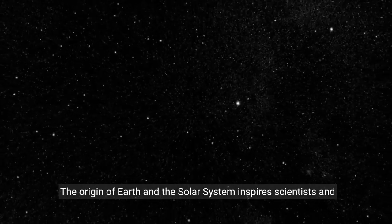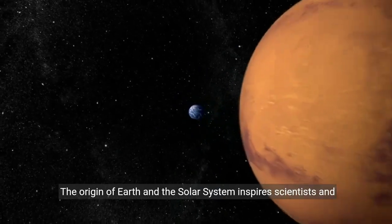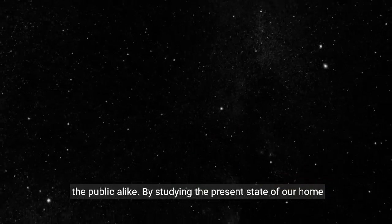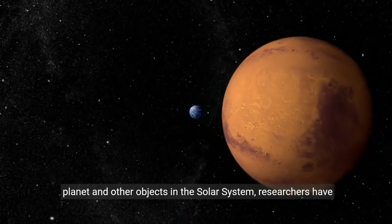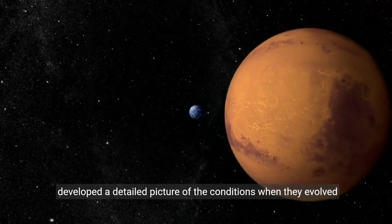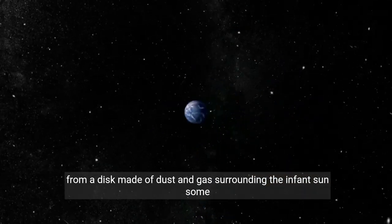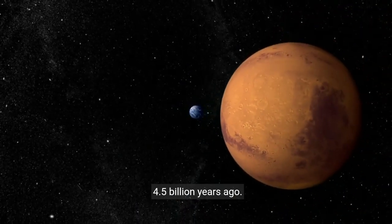The origin of Earth and the solar system inspires scientists and the public alike. By studying the present state of our home planet and other objects in the solar system, researchers have developed a detailed picture of the conditions when they evolved from a disk made of dust and gas surrounding the infant sun some 4.5 billion years ago.